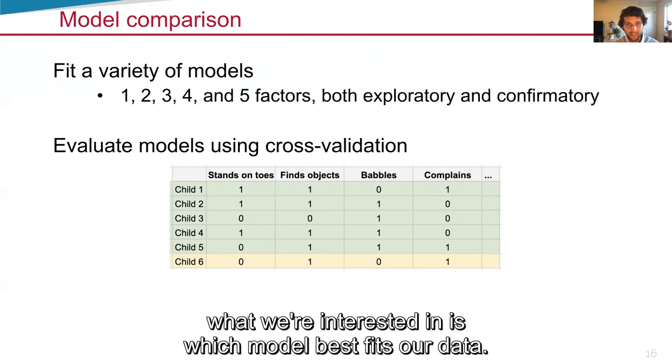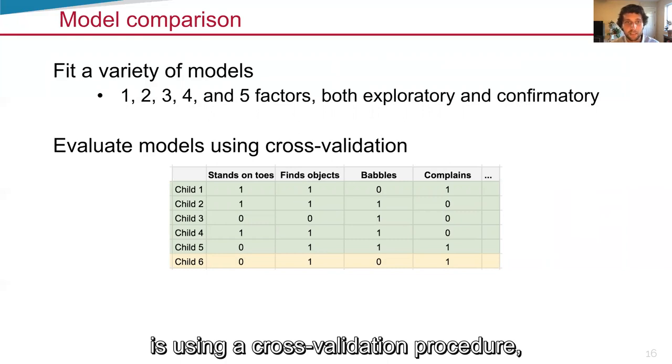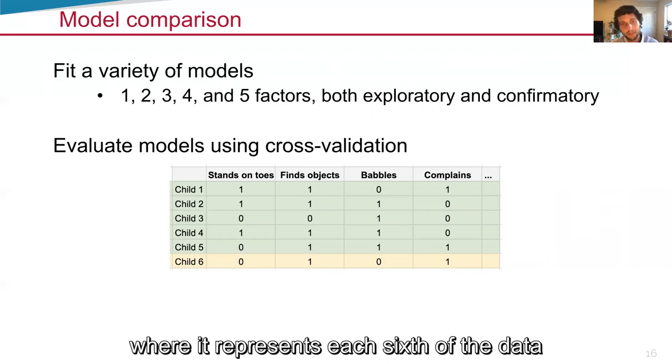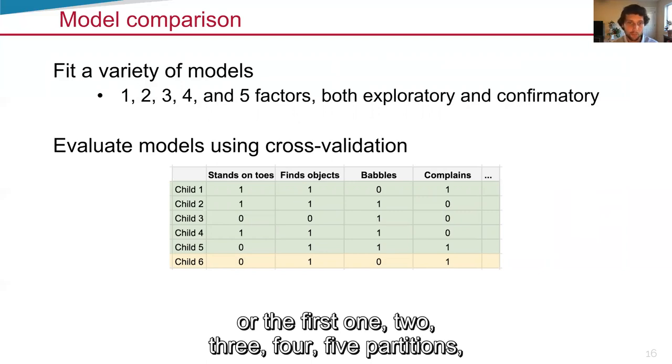When we're fitting these variety of models, what we're interested in is which model best fits our data. And the way we measure that is using a cross-validation procedure, where I'll represent each sixth of the data as a child here. So the first one, two, three, four, five children, or the first one, two, three, four, five partitions, we fit the model to.